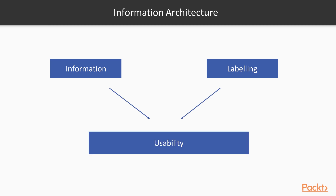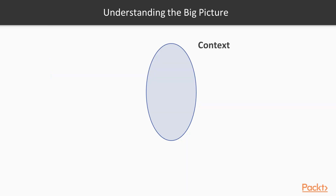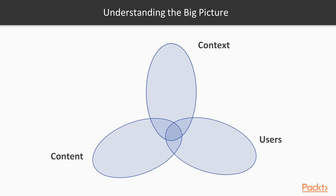What we're really focusing on here is usability: can someone use your website easily, and can they just get started straight away? Always remember the big picture. There are three components to the big picture, and we're going to start by thinking about context. The context, the content, and the users — all of these beautifully come together. When we can understand all three, we can really get to grips with information architecture.